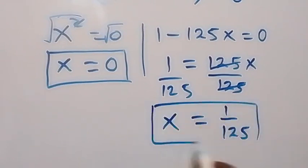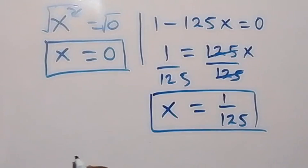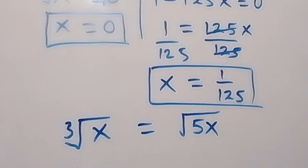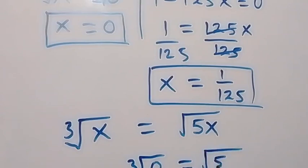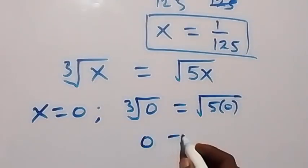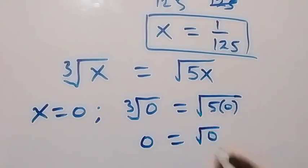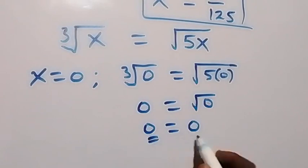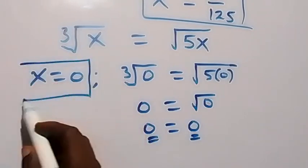From here we have two cases: x squared equals zero, and one minus 125x equals zero. For the first case, taking the square root of both sides, the square and square root cancel and we have x equals zero — since the square root of zero is zero. So x equals zero is the first solution.